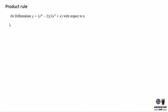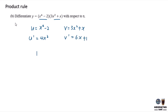Now, to do the product rule of this question, first apply u to this part, which is x to the power of 4 minus 2, and v to this part, which is 3x squared plus x. And u prime will give me 4x cubed and v prime will give me 6x plus 1.